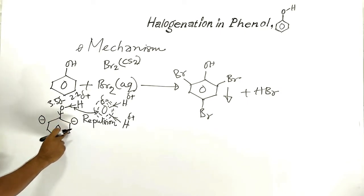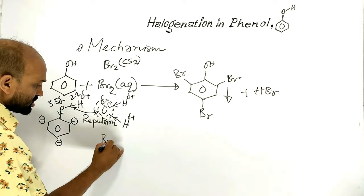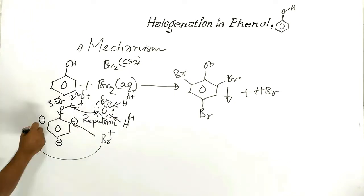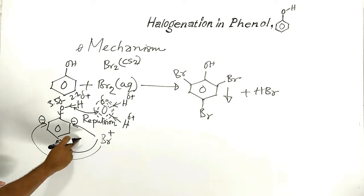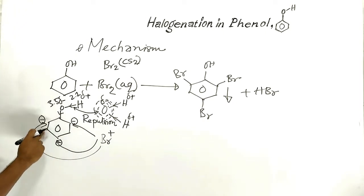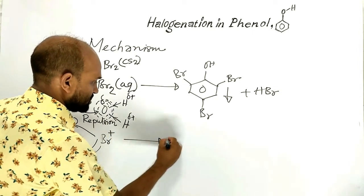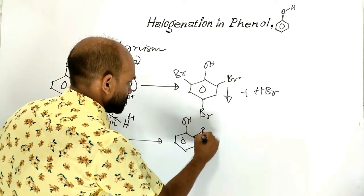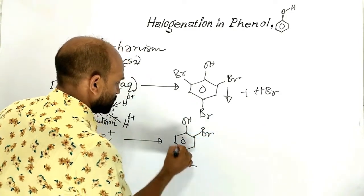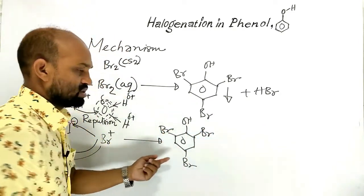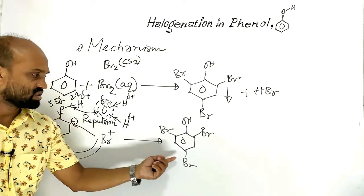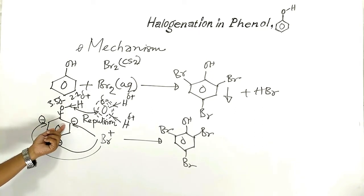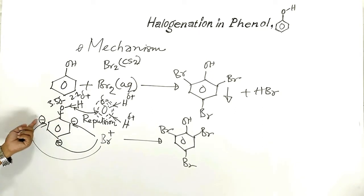Because of the higher electron density, the bromine cation attacks ortho positions and para positions at the same time. As a result, 2,4,6-tribromophenol is formed. Simply put, water increases electron density in the benzene ring at ortho and para positions.